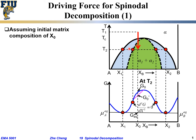The bottom plot represents the Gibbs free energy versus composition curve at a given temperature — in this case T2. The common tangent for this Gibbs free energy curve represents the binodal line, which is the equilibrium phase boundary between the single phase and two phases. The two inflection points on this curve — the transitions between concave down and concave up — correspond to the spinodal boundary.